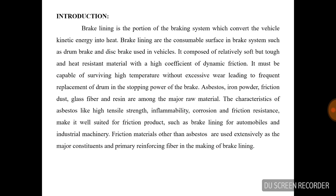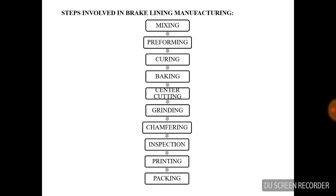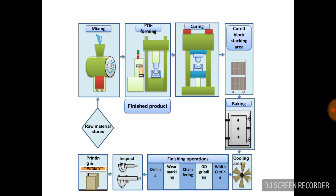Asbestos, iron powder, friction material, glass fiber, and resins are the major raw materials. The characteristics include high tensile strength, corrosion resistance, and friction resistance. The friction materials other than asbestos are used effectively and primarily as reinforced fiber in making brake lining. Steps involved in brake lining manufacturing: mixing, preforming, curing, baking, center cutting, grinding, chamfering, inspection, printing, and unpacking.